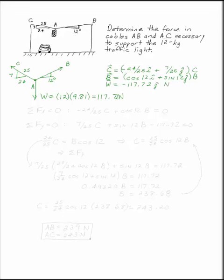Once we have our forces in Cartesian form, we can write the equations of equilibrium. Sum the forces in the X direction and set them equal to zero. That looks like adding up all the I's. Minus 24 over 25 C plus cosine 12 B equals zero.